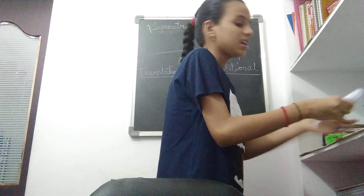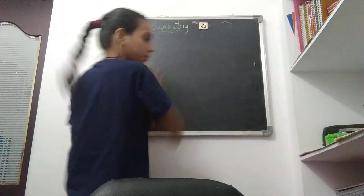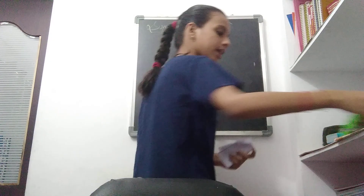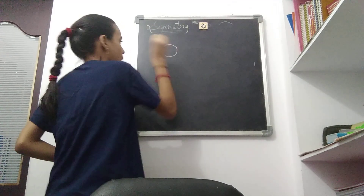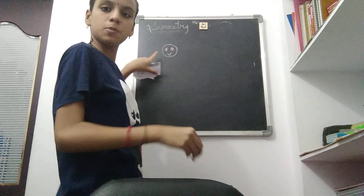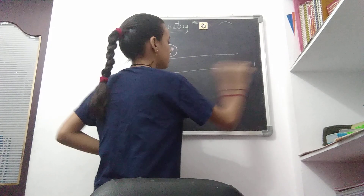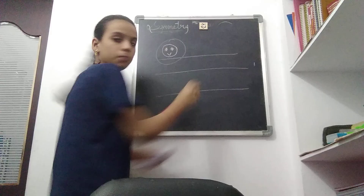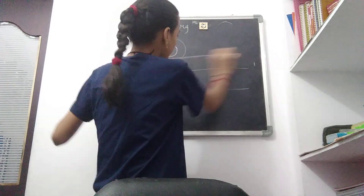Translation symmetry is nothing but if a picture is given to you — suppose a smiling face — this picture should be translated many times as you want. The same picture should be repeated a number of times. We can slide the figure along a straight line.